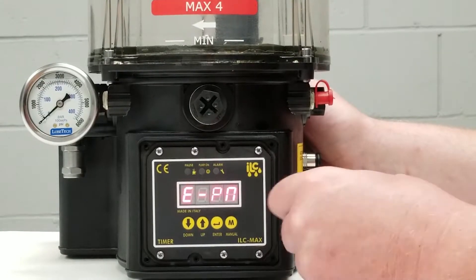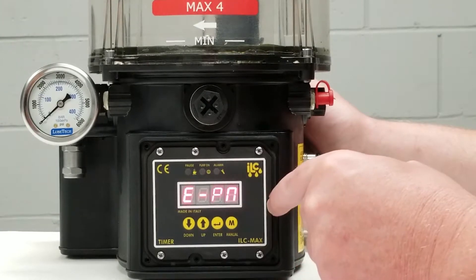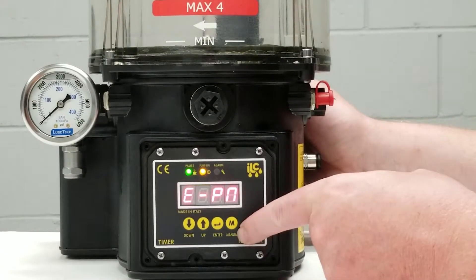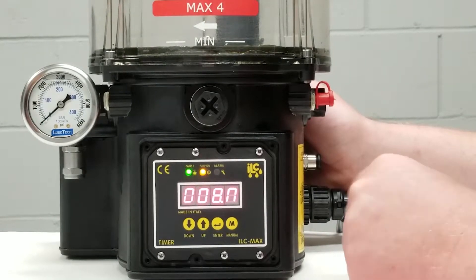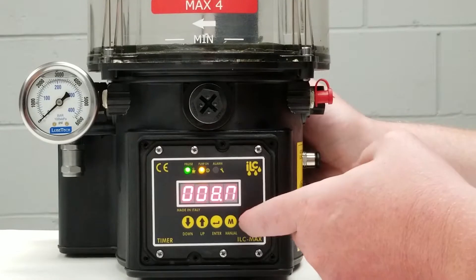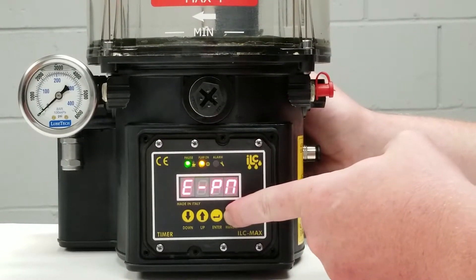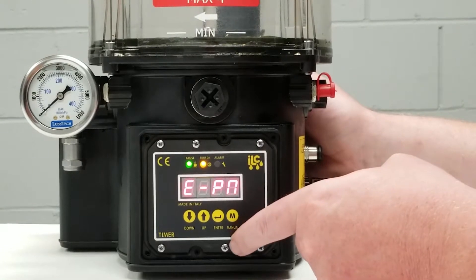E-PN is your pause time in minutes. To enter and see what this value is set at, we're going to press the M button and currently my delay time is set at eight minutes. I'm okay with that. I'll press the M button to bring me back out to the programming menu and we will continue on.